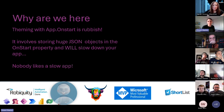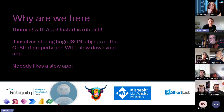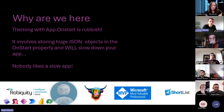A little bit about why we're here. Without putting a finer point on it, theming in App OnStart is rubbish. It involves huge JSON objects that are loaded when your app starts and it will slow down your app. From a user point of view, nobody likes a slow app. We're all busy people - no one wants to sit for three or four minutes waiting for something to load.